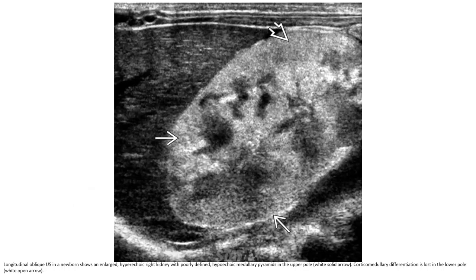This is the oblique ultrasound in the newborn showing a large hyperechoic kidney with a poorly defined hyperechoic medullary pyramid in the upper pole. Corticomedullary differentiation is low in the lower pole.